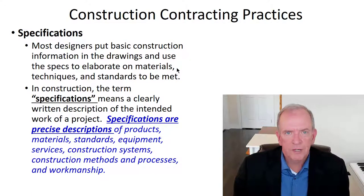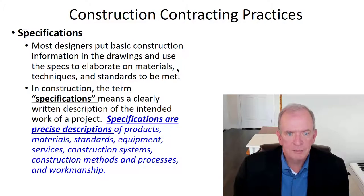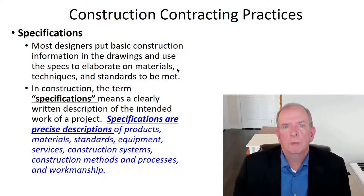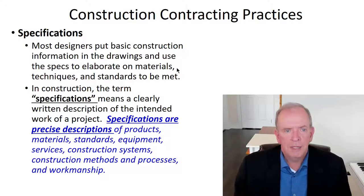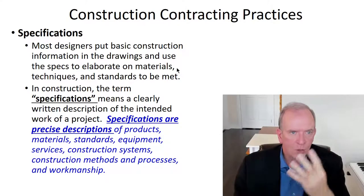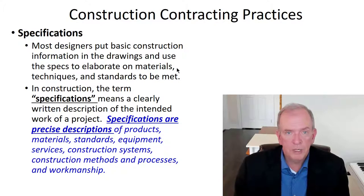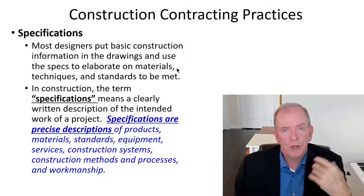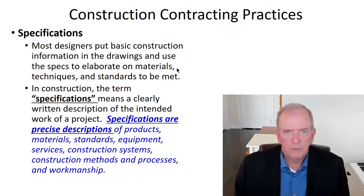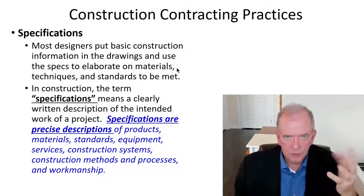For specifications, we use standard specifications known as master format specifications — the old 16-division format and the newer 49-division format (divisions 0 through 49). These standardized specifications give very precise descriptions of products. A good example: a government agency wants to replace all the windows in one of their government buildings. They would typically specify maybe three or four approved window manufacturers that they've vetted and tested to a certain standard, and they'll usually say 'or approved equal' — so if the contractor wants another supplier that meets the requirements, that could be approved later on.